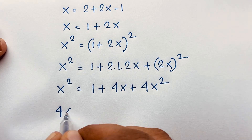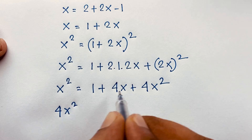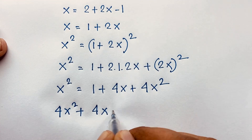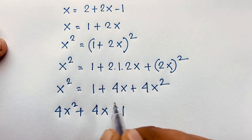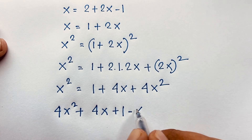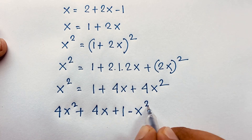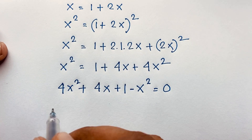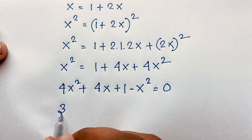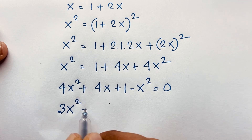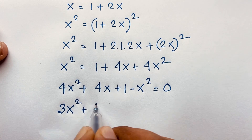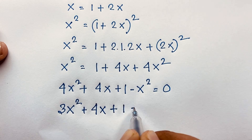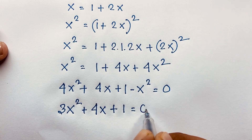So it will be 4x squared plus 4x plus 1. Then if I move x squared to this side, it will be negative x squared, giving us 3x squared plus 4x plus 1 is equal to 0.